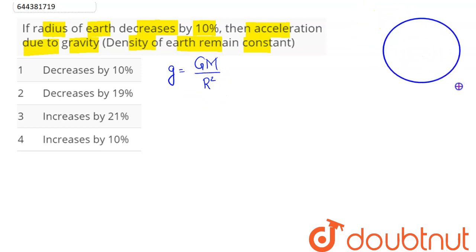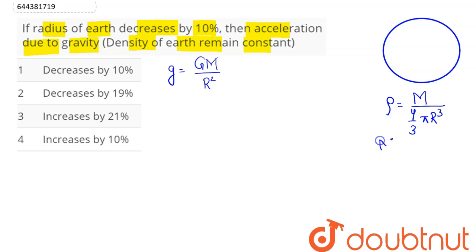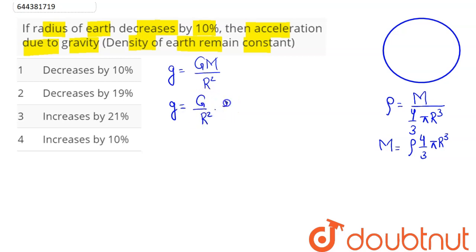Since the density of the Earth remains constant, we write density as mass divided by volume, that is 4/3 π r³. So the mass M can be written as ρ times 4/3 π r³. Substituting this into the formula for g gives g = (G/r²) times ρ times (4/3) π r³.